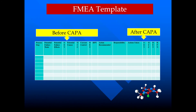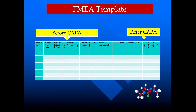Here is the FMEA template. We write down the process steps, the potential failure mode, and the potential failure effect. Then we score for severity — if severity is very high, meaning it can cause serious injury or death, we rate it as 5. If severity is very low, we rate it as 1. Then we find the potential causes and the occurrence of that failure. If it is occurring again and again, we rate it as 5.